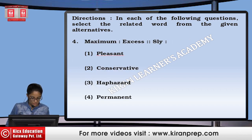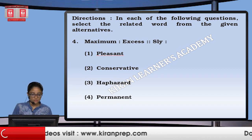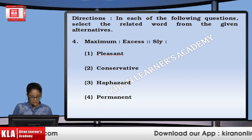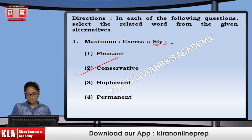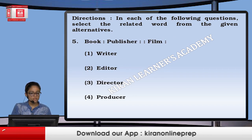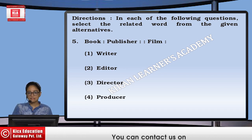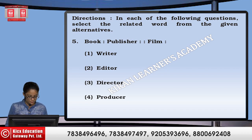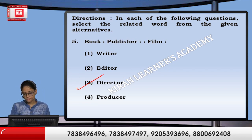Next, maximum is to excess. Maximum and excess are synonymous. So, sly's synonym is conservative — we are going to mark option number two. Next, book is to publisher — a book is published by the publisher. Similarly, a film is directed by the director, so we are going to mark option number three.